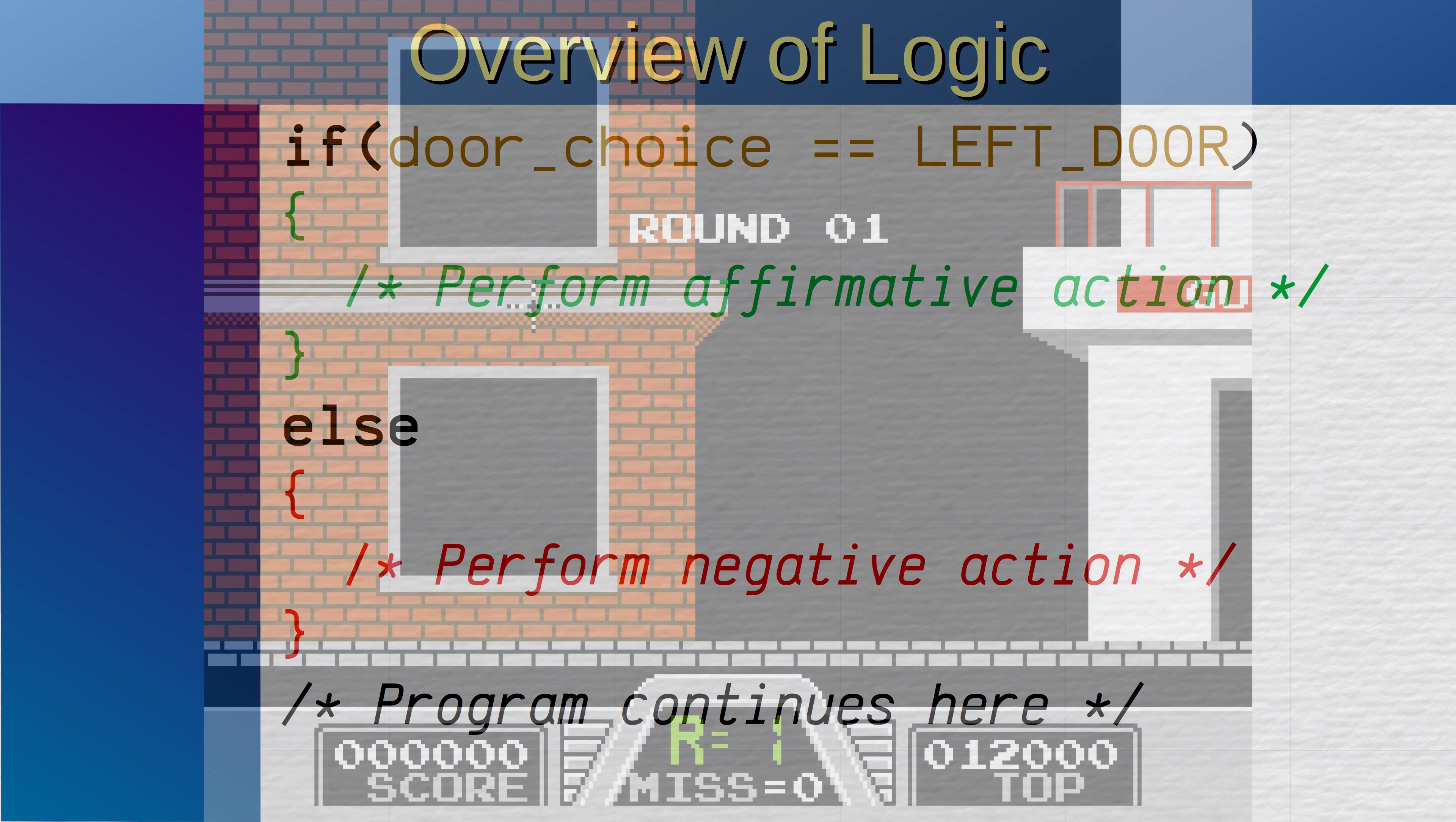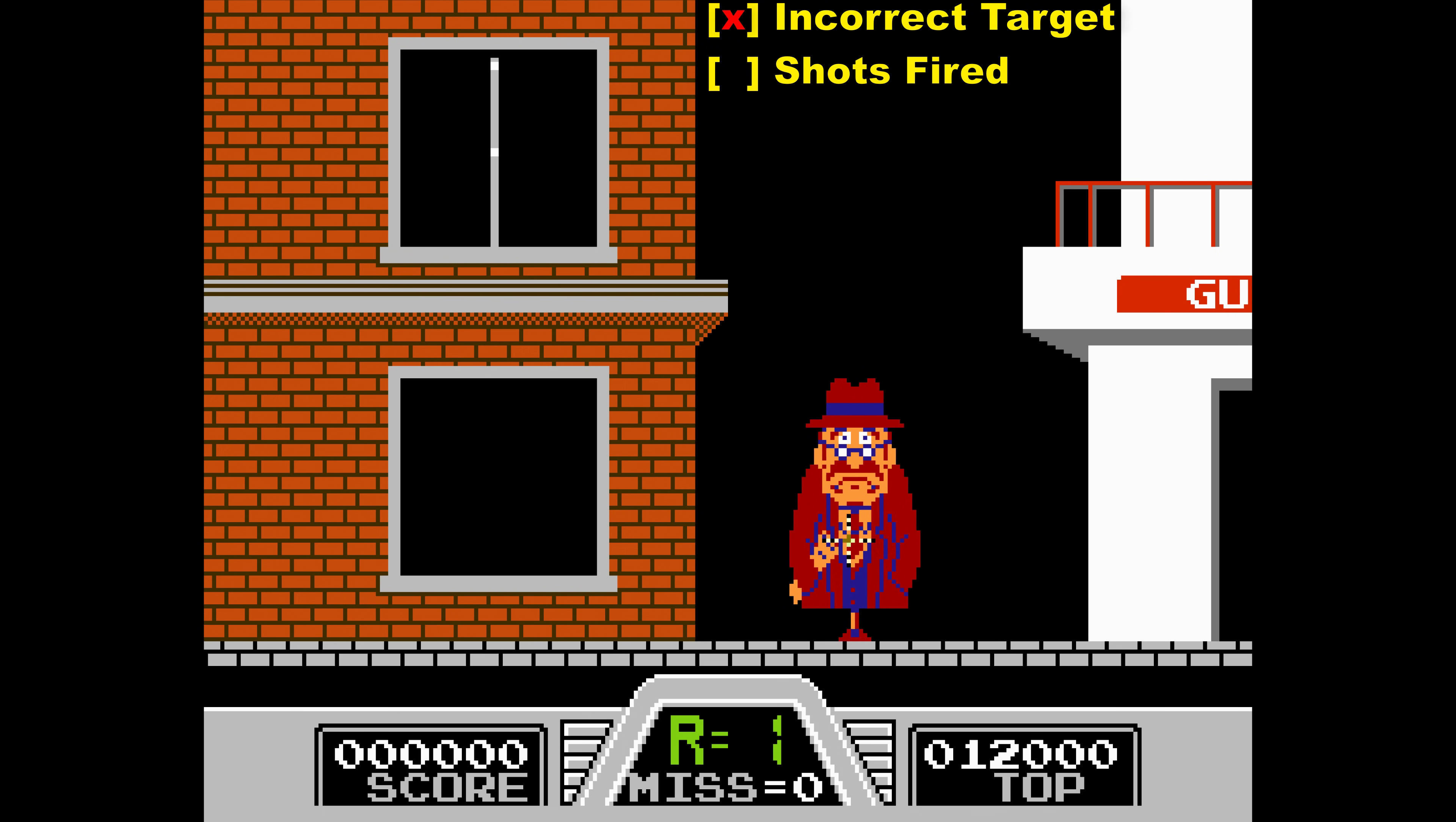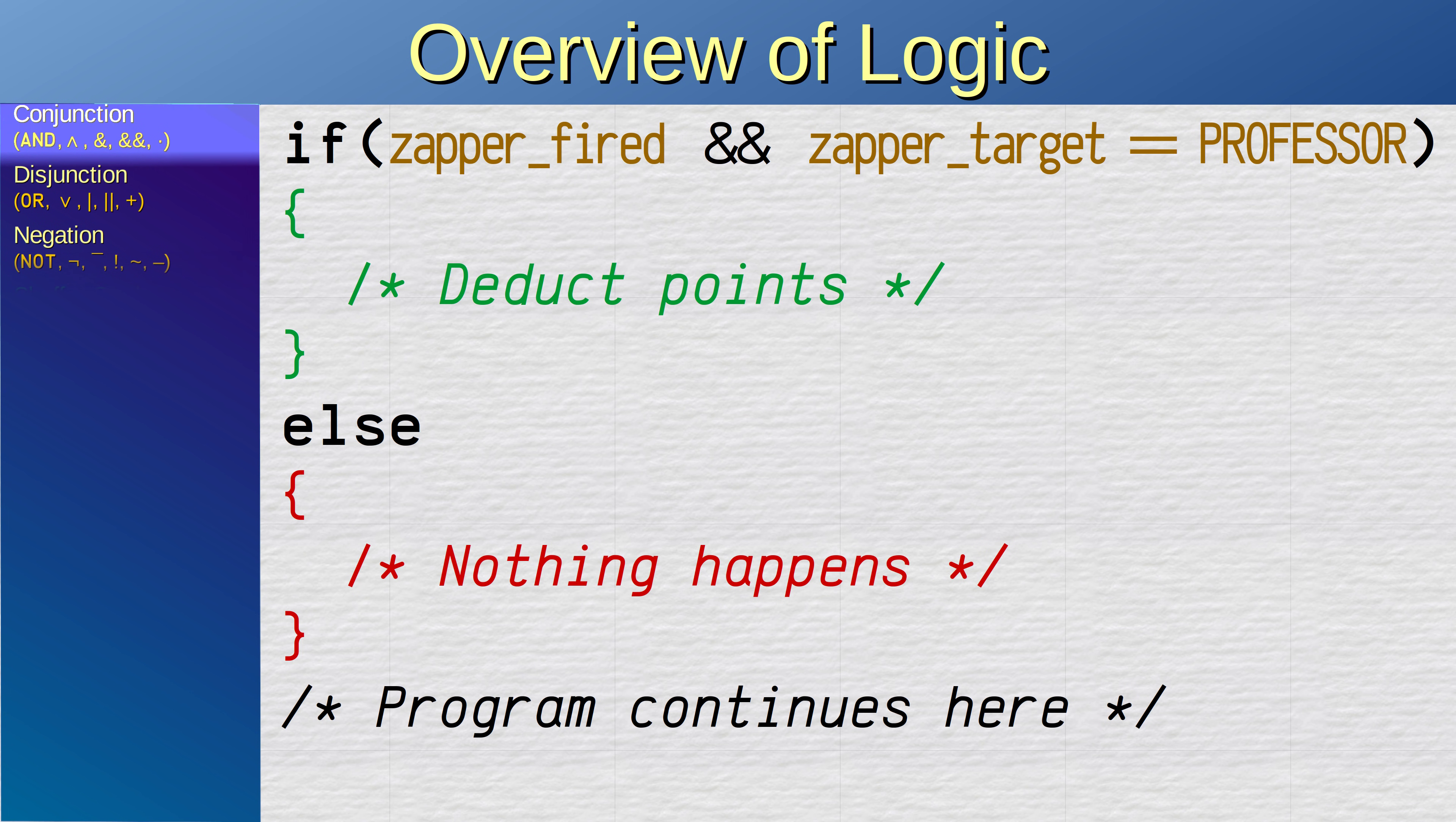However, sometimes decisions are more complex. In this scenario from Hogan's Alley, you have the decision to fire the zapper or not to fire the zapper. However, what happens depends on when you fire the gun. In other words, if you fire the zapper and there is a professor, you lose the round. Both conditions have to be true for this to happen. Neither condition alone will do it. This AND condition is called a conjunction.